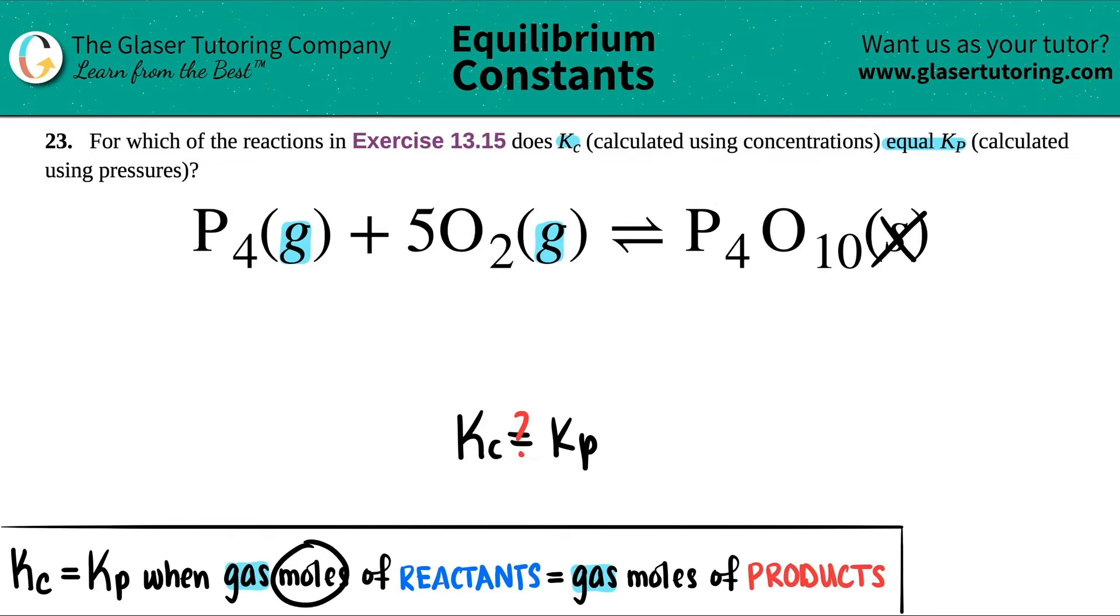Now, how are we going to find out the moles? Oh, those are just the coefficients, the big numbers in the front. Let's see. There was no number in front of the P4, that means I have one, but there was five O2s. So one literally plus five is a total of six moles of gas on the reactant side.